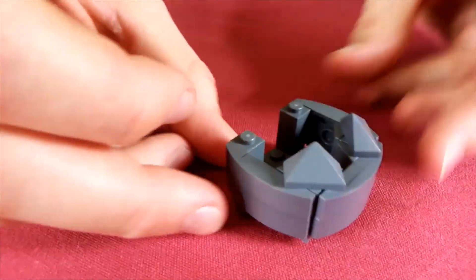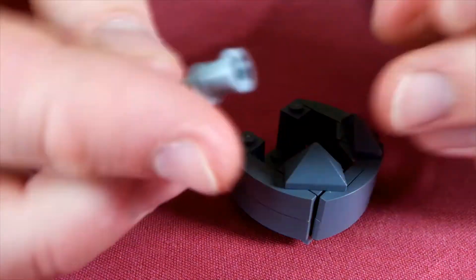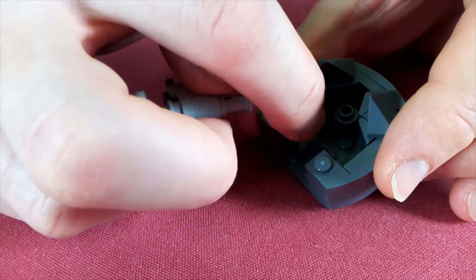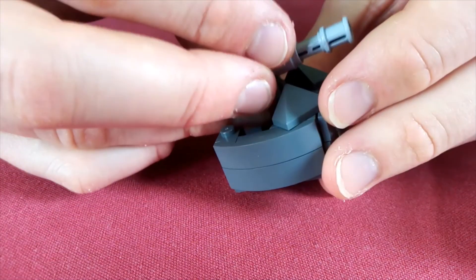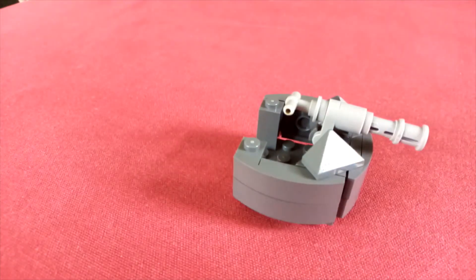Okay, that's the turret done, and now finally take the gun we made earlier. This pin here is just going to sit on the top of this cylinder here. And that's your laser turret finished.